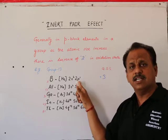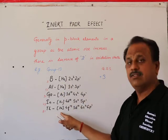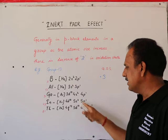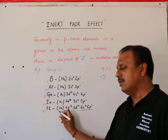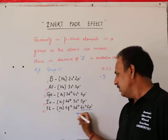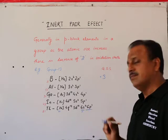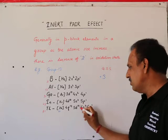After losing these three electrons, they get inert gas configuration. But as size increases, losing three electrons doesn't give xenon configuration, so these electrons also don't participate.